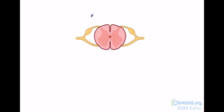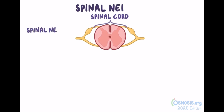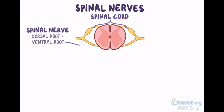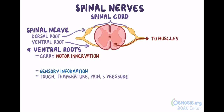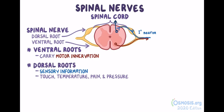The peripheral nerves originating from the spinal cord are called spinal nerves. Each nerve is formed by a dorsal and ventral root. Ventral roots contain neurons that carry motor innervation from the spinal cord to the muscles. Sensory information, like touch, temperature, pain, and pressure from the skin and other tissues, travel through first-order sensory neurons in the dorsal root ganglion near the spinal cord, then through the dorsal root and into the spinal cord, where it synapses with the second-order neurons.